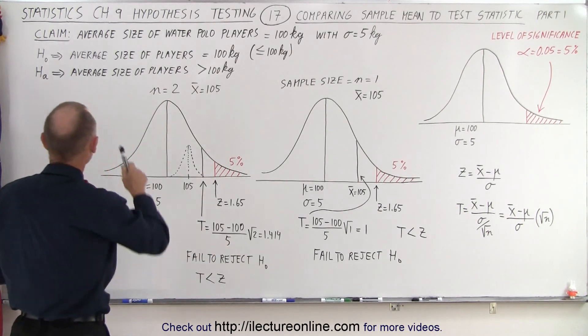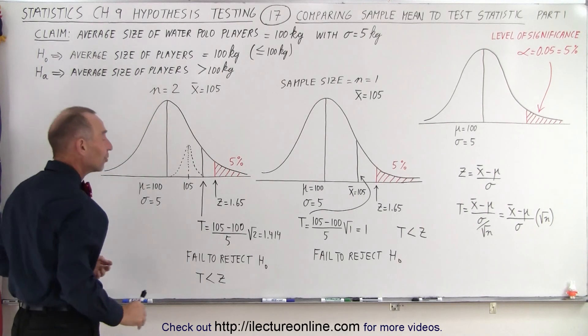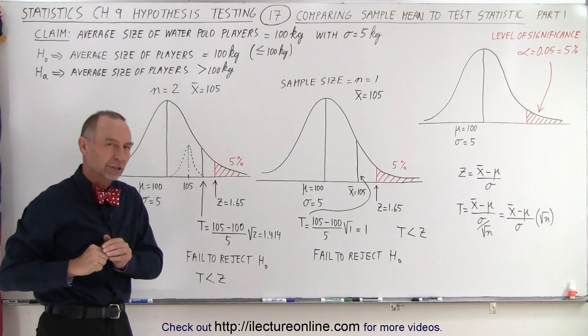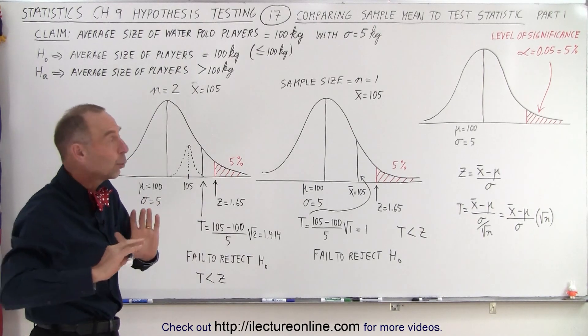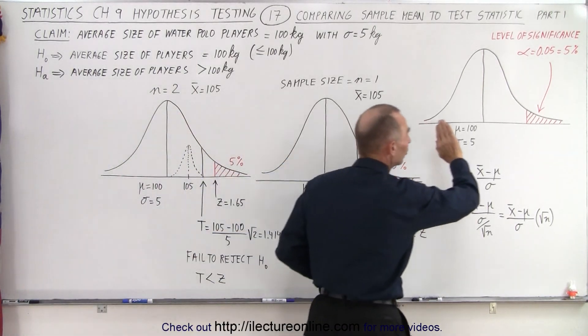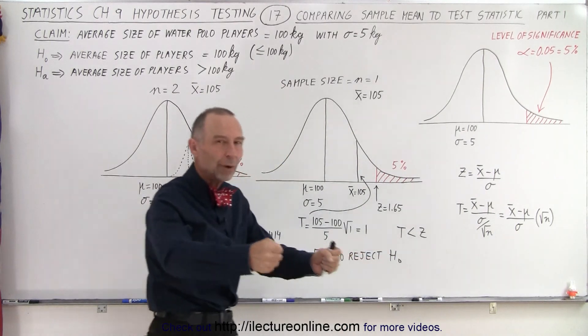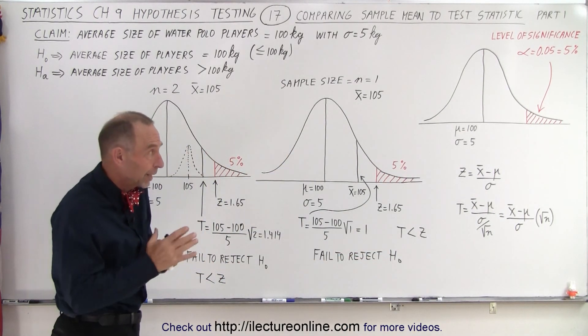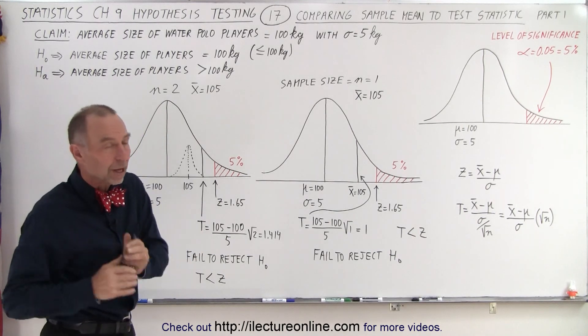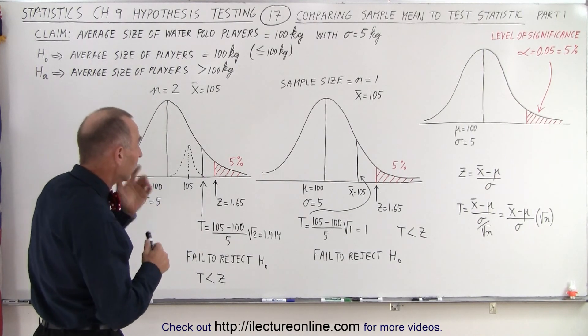The alternate hypothesis is that the average size of players is greater than 100 kilograms, because there's a suspicion that it might be bigger. That's why we use the one-tail test. We're going to see if by taking some random samples, we're going to find that the average size of water polo players is greater than what we thought it was, greater than the 100 kilograms.